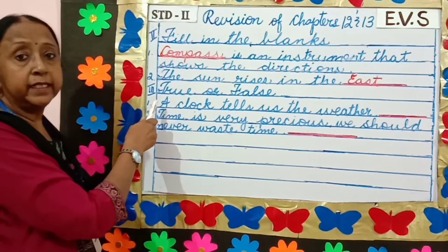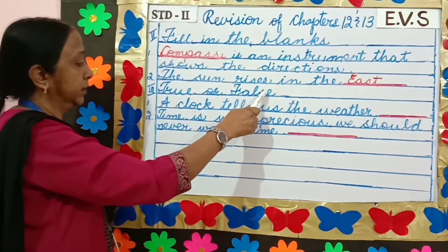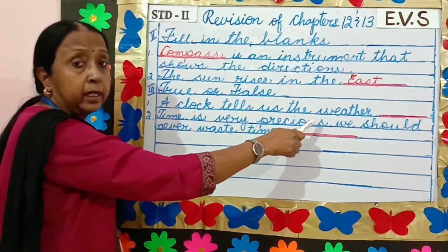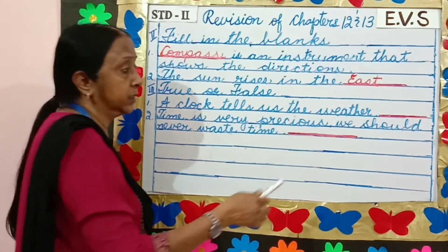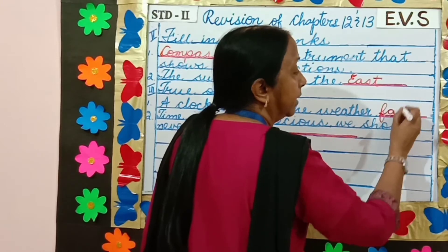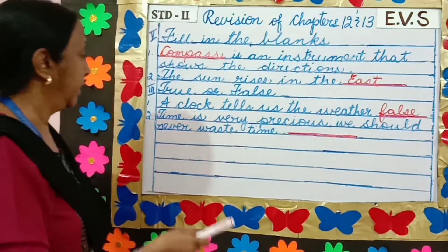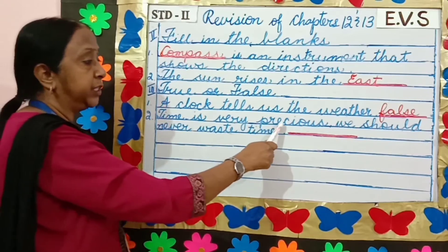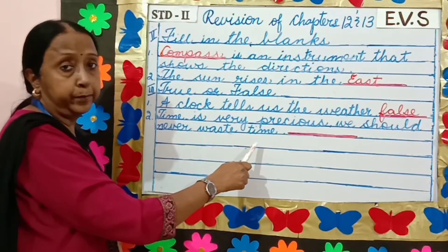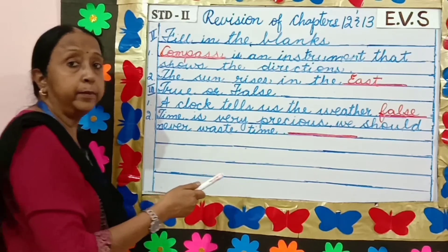Next question is true or false. Our clock tells us the weather. It is false — it tells us the time. Time is very precious, we should never waste time. True.